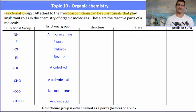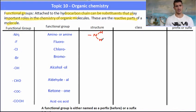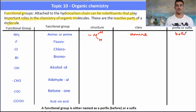A functional group is a part of the molecule that plays a part in the chemistry. It's a reactive part of the molecule that's usually not a carbon or a hydrogen. So for instance, the functional group NH2 is referred to as an amino or an amine functional group. Its class is also known as an amine, and the chemical will be called an amine.